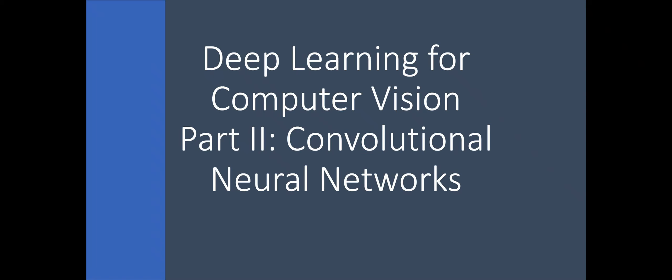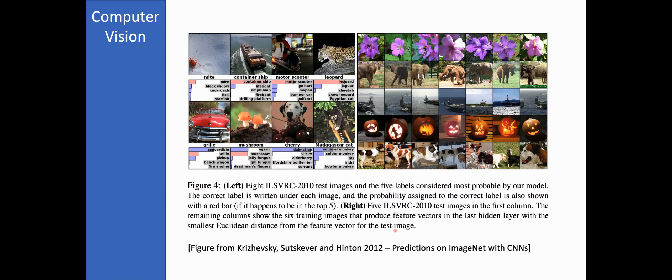Hi everyone. This week we will talk about convolutional neural networks in the second part of our Deep Learning for Computer Vision lecture series. Last week we discussed the motivation for studying deep learning methods for computer vision, and we said that for ImageNet, deep learning methods yielded the highest accuracies ever. Since 2012, there have been quite a number of efforts in making deep learning architectures better in several vision tasks, including recognition for the ImageNet challenge.